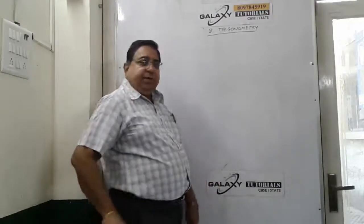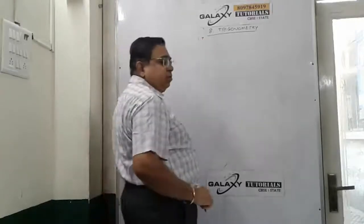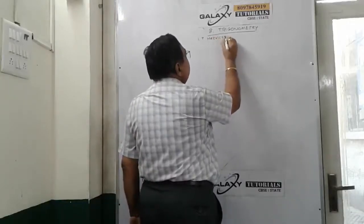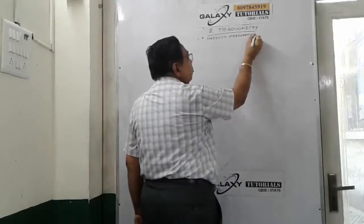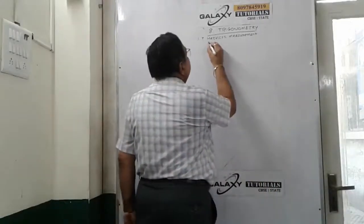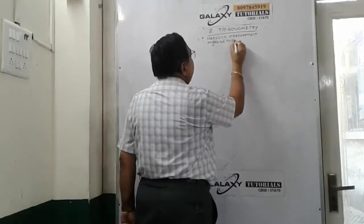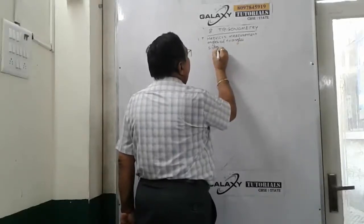Let us use the time fruitfully. I am starting Trigonometry. What is trigonometry? 'Metry' means measurement in Latin, like how we use a meter. So trigonometry is measurement — specifically, we are measuring angles of triangles and sides of triangles.